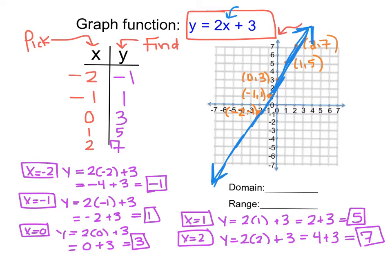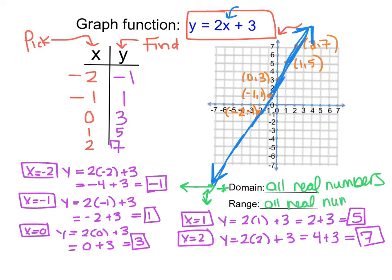My last step is to determine the domain and range of this graph. Focusing on domain — domain is all the possible x values — I notice my graph is going forever to the right and forever to the left, so the domain is all real numbers. Then looking at range, my graph is going forever up and forever down, using every possible y value, so the range is also all real numbers.